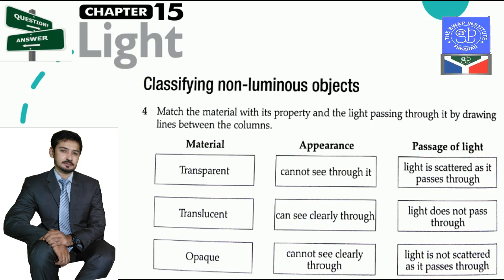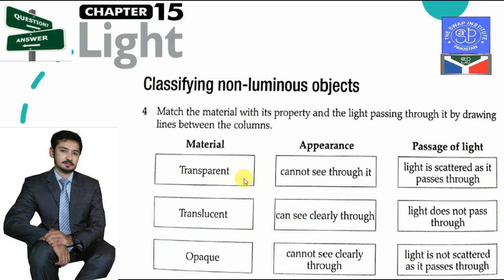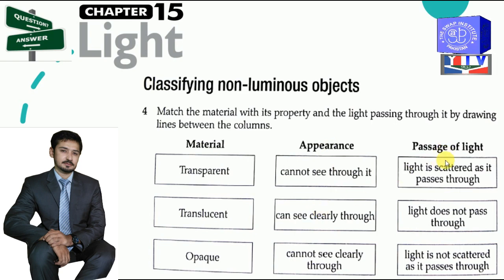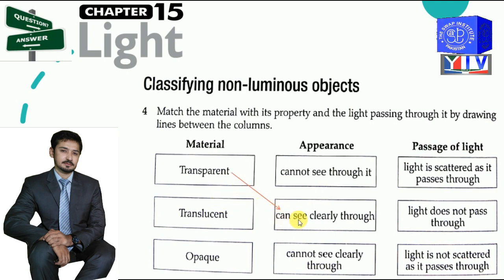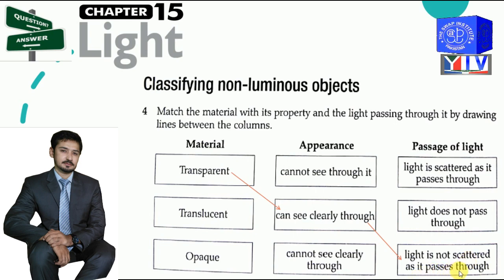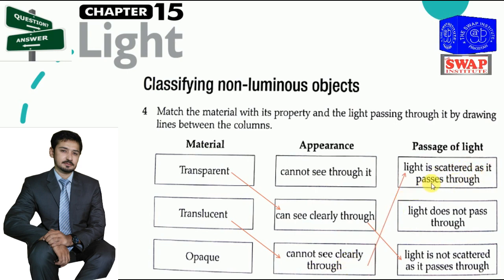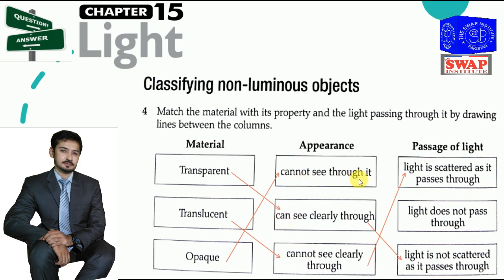The next question: classifying non-luminous objects. This is a table — the first column shows materials, the second shows appearance, and the third shows passage of light. Transparent: you can see clearly through it; light is not scattered as it passes through. Translucent: cannot see clearly through; light is scattered as it passes through. Opaque: cannot see through it and light does not pass through.